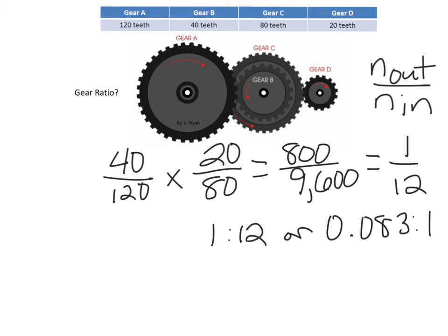Notice how small of a number 0.083 is — that is a pretty large gear ratio. It's because we go from a larger gear to a smaller gear, and then from a larger gear to a smaller gear again. So we're able to get higher gear ratios with compound gears than we are with just meshing two gears together or having idle gears in between.